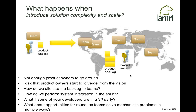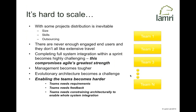Throwing in geographical distribution makes the communication challenge tougher. As we grow, distribution sometimes becomes inevitable — customers don't have enough engaged end users willing to travel and co-locate with teams all the time. Completing full systems integration in the sprint becomes difficult, and as soon as you compromise that, you've thrown out one of agile's greatest strengths.